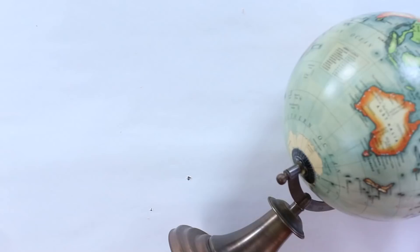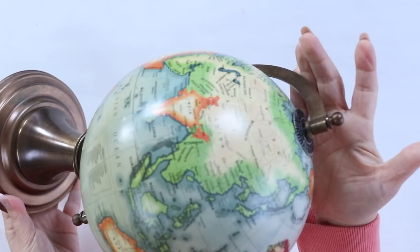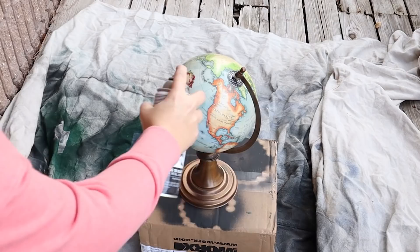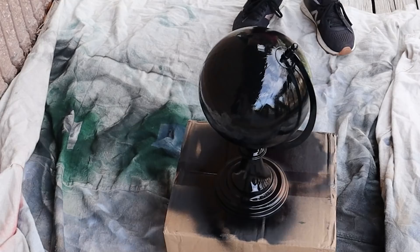And one of the things I found was this globe. I probably thrifted this maybe nine months to a year ago, and I never did anything with it, and I knew I had to do a project with it. So I started by spraying it completely black. You may have seen this in some high-end stores, and globes are a great thing to find at the thrift store.